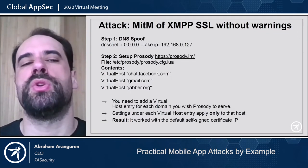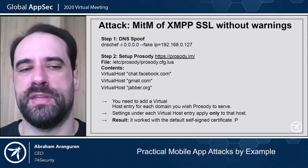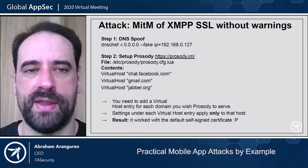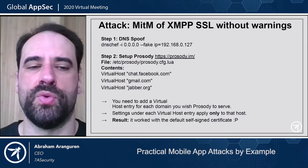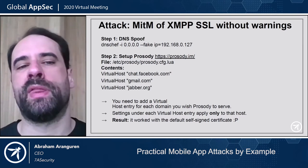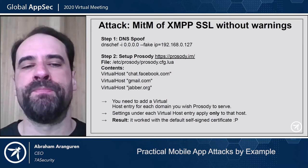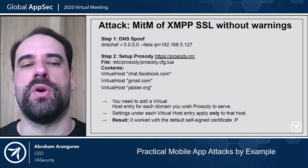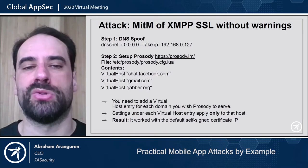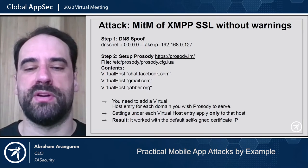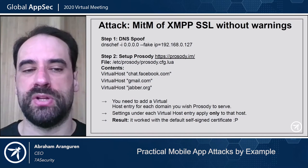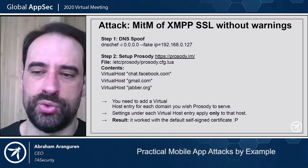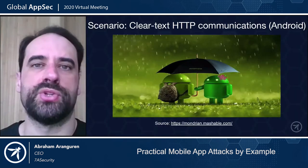Another thing you can do when performing a man-in-the-middle on XMPP — the protocol used by chat applications like Jabber, Facebook, and Gmail — is set up Prosody. By default, Prosody runs with a self-signed certificate. If you can get the application to authenticate to your Prosody server, that means the application is trusting self-signed certificates. This is a good test to do when you face a situation like that.